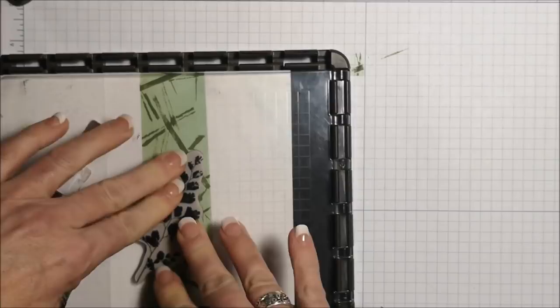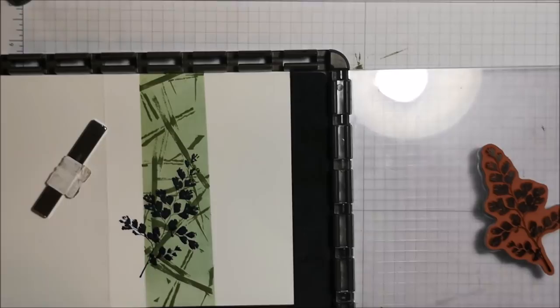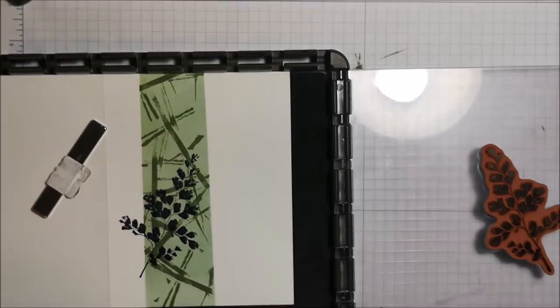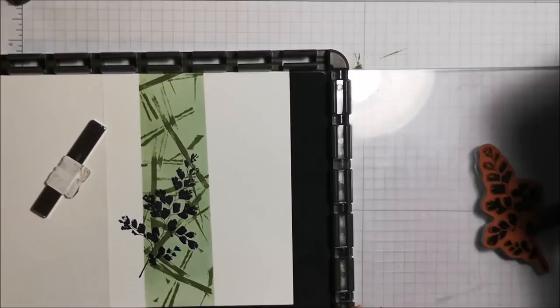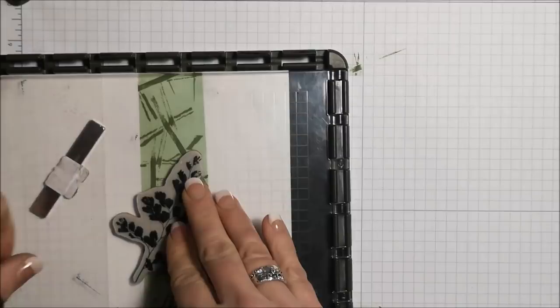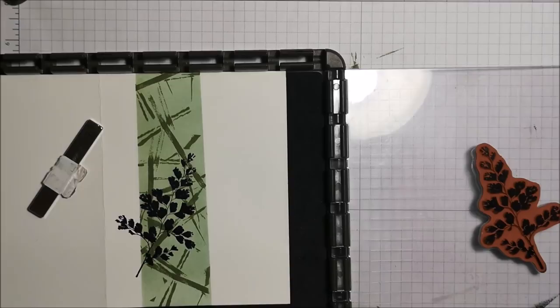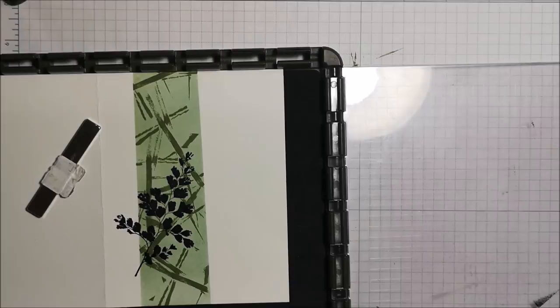Okay, and of course with the Stamparatus I can stamp this image again if I want to make it darker. I think it looks pretty great but you know what, let's go ahead and re-stamp this, make it even darker. Oh my gosh yes. So nice. Now I'm going to move this. I'm not going to clean it because I'll probably use it later.